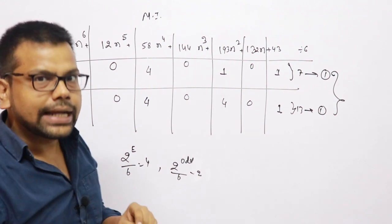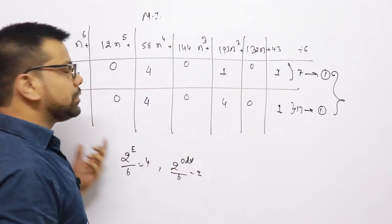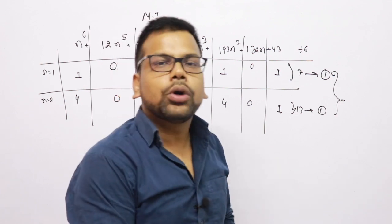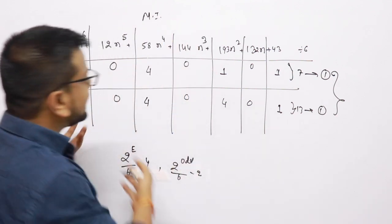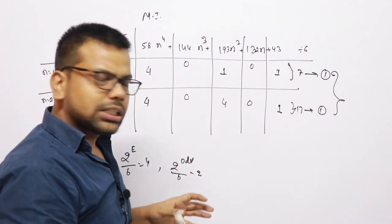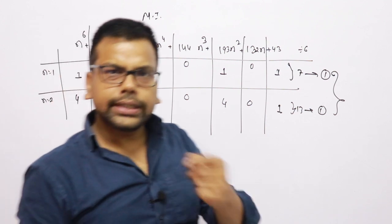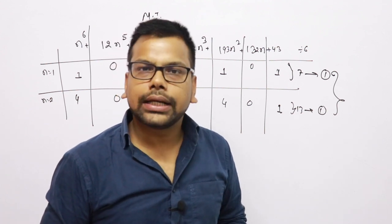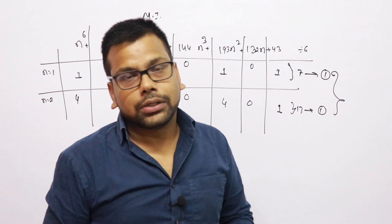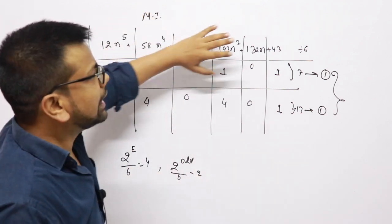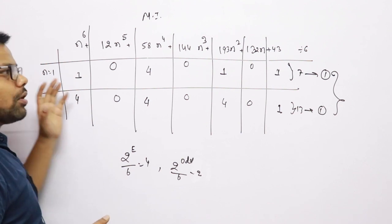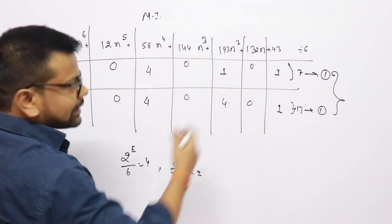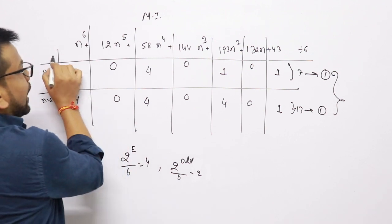There is a 99% chance the remainder is the same, and question setters generally try not to create exceptions at n equal to 3. The question setter could create a question where n equal to 3 gives a different remainder, but the chances are very low in an aptitude examination. Whenever this type of algebraic question appears, put n equal to a few values, and if the remainders match, that is your answer.